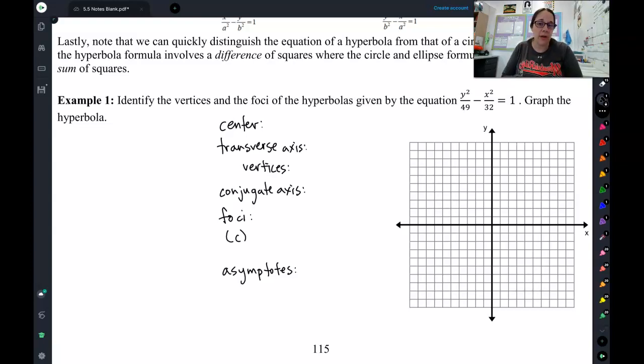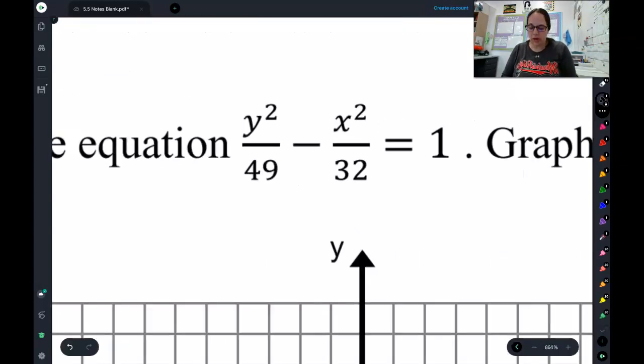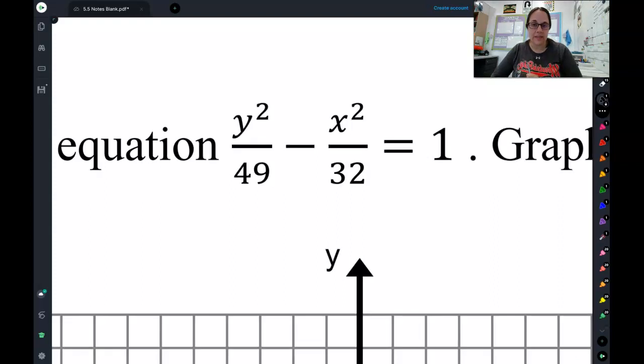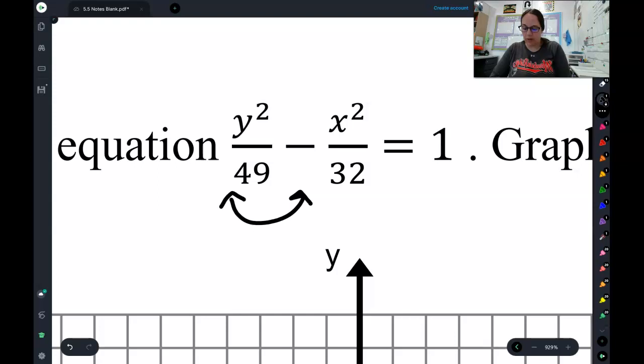Let's practice graphing our first hyperbola. Let's zoom in on the equation we're using here. This is it. Now, first thing I'm going to note about this equation is the y comes first. So since y comes first, that means these branches of my hyperbola should go up and down.